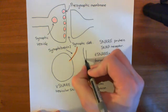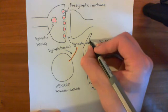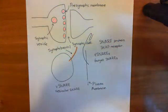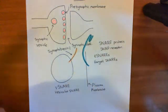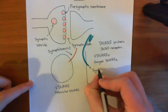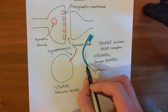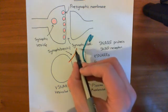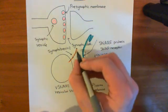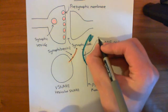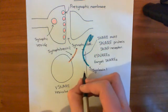Now let's look at the T-SNAREs, of which there are two. The first one, coloured in blue here, is syntaxin-1. Syntaxin-1 has a membrane-spanning alpha helix, and then another alpha helix — known as the SNARE motif — which is going to interact with the alpha helix of synaptobrevin-2. This SNARE motif takes part in the formation of the core SNARE complex, which will hold the synaptic vesicle to the plasma membrane.